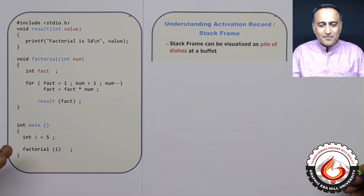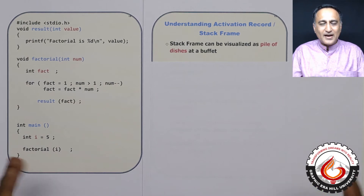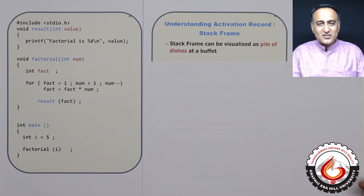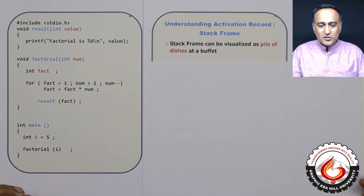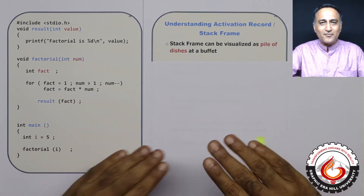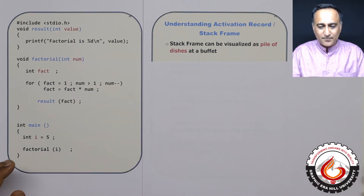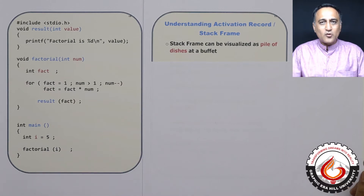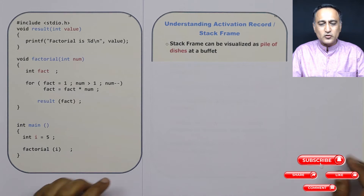A stack frame can be best thought of as a buffet where plates are kept one on top of the other — the plate placed last is taken out first. The best way to visualize this stack box is to think of a pile of dishes or a number of books piled up one on the other; you always take out the topmost book first, then the one below that, and so on.